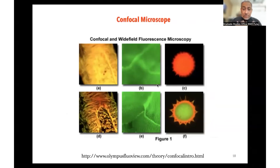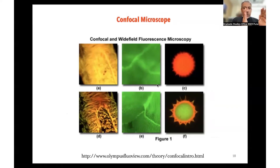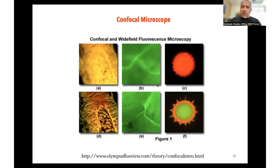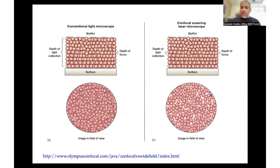Beyond conventional microscopy and fluorescence microscopy, another major advance is confocal microscopy. Conventional microscopy allowed us to see cells in new ways; fluorescence microscopy let us tag specific things with a fluorophore and visualize them inside the cell. Confocal microscopy is the next major advance, and conceptually it does something quite different that is beautifully illustrated.